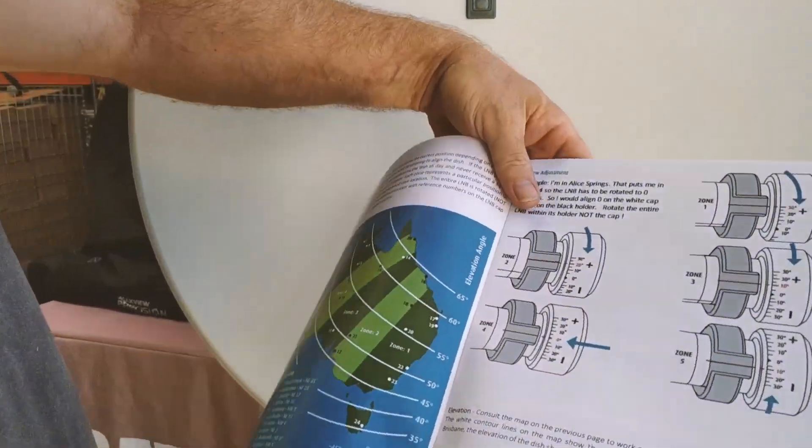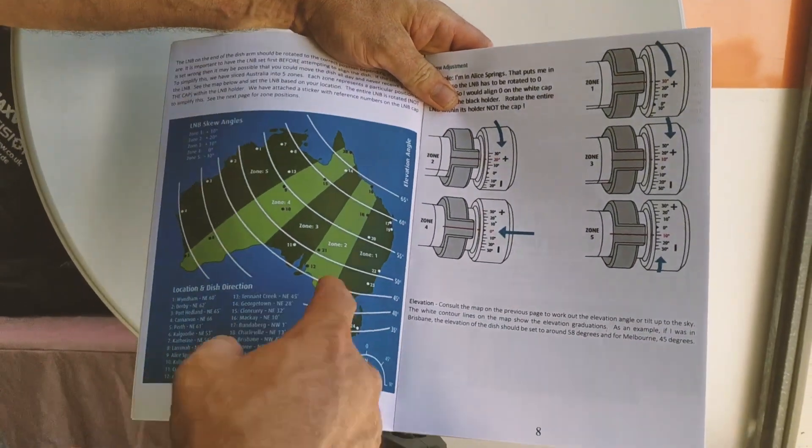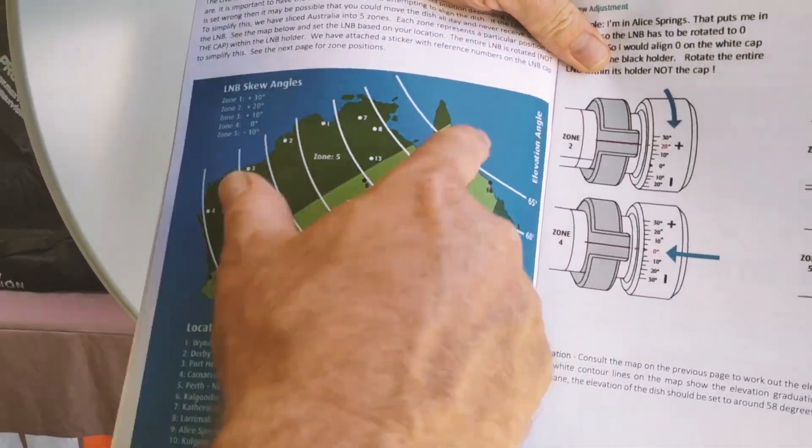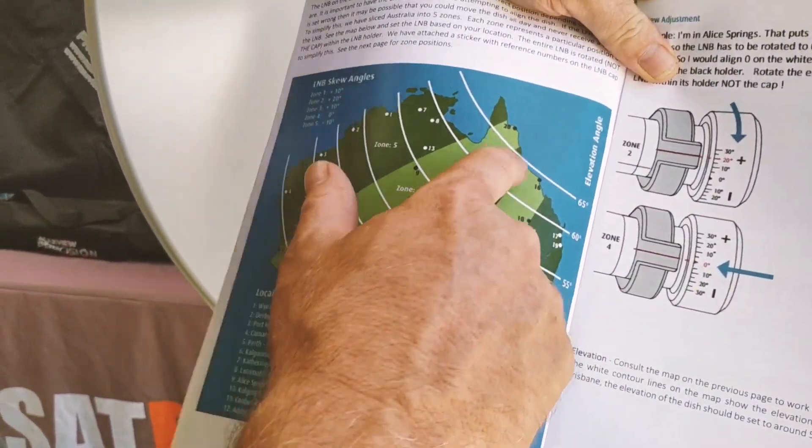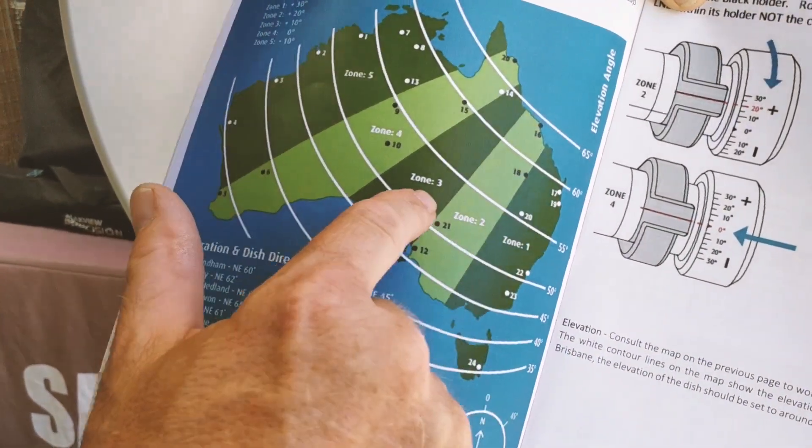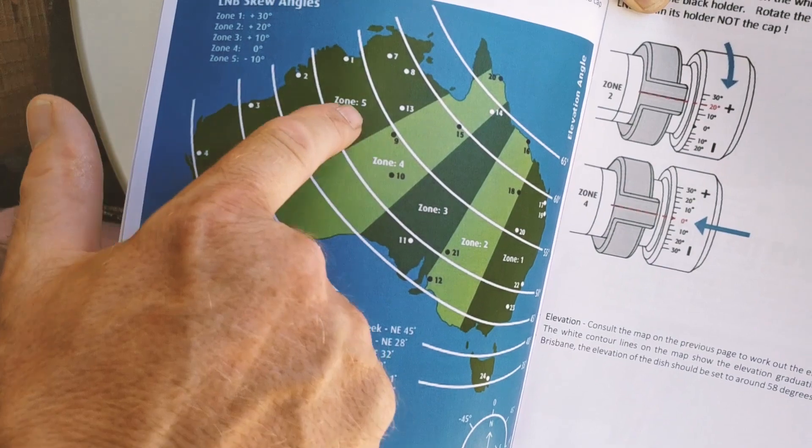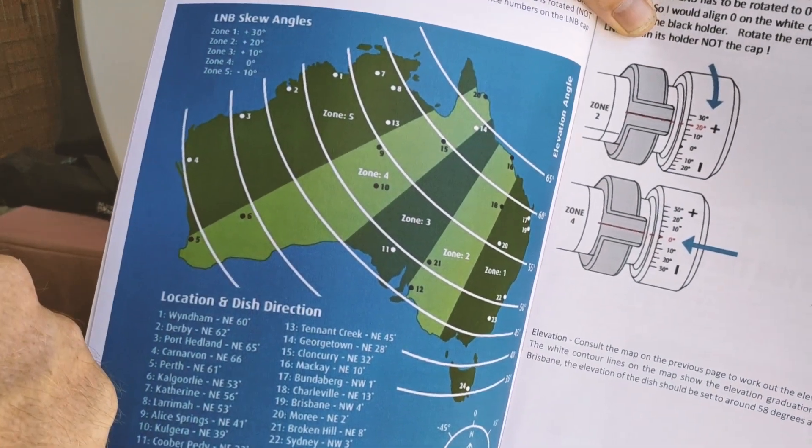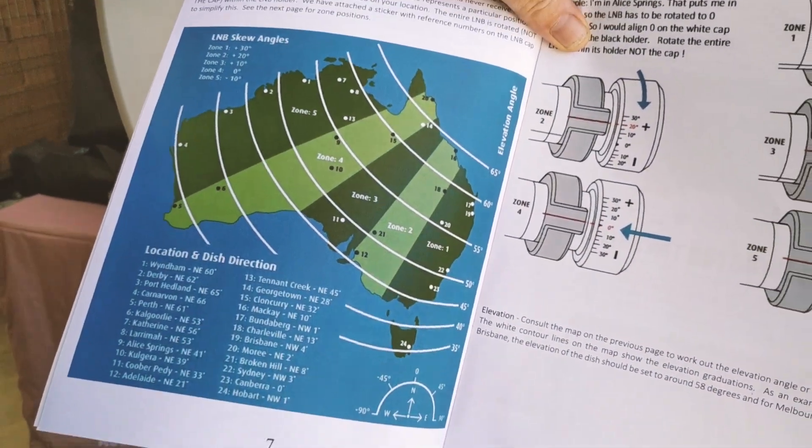When you look at our manual, you can see that we've sliced Australia up into five wedges: dark green, light green, dark, light, dark. We've got zone one, two, three, four, and five.